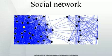Overview: The social network is a theoretical construct useful in the social sciences to study relationships between individuals, groups, organizations, or even entire societies. The term is used to describe a social structure determined by such interactions.